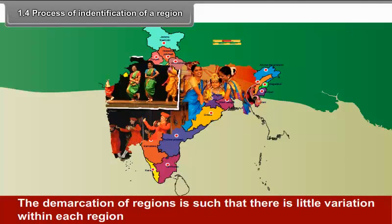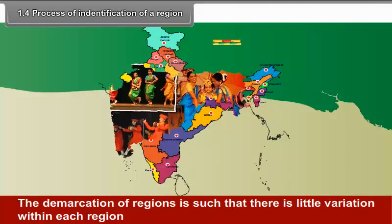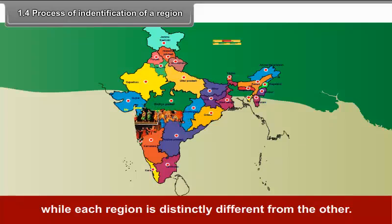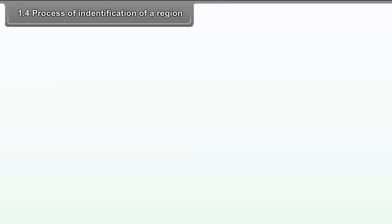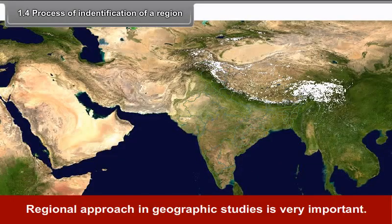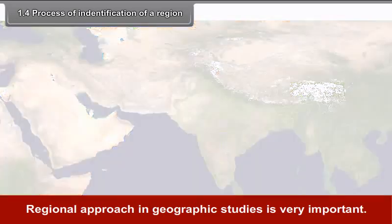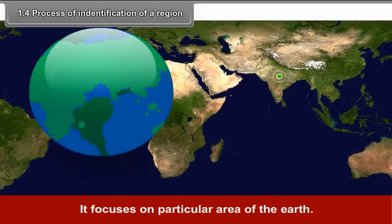For example, the divisions of a nation into states and states into districts. The demarcation of regions is such that there is little variation within each region, while each region is distinctly different from the other.